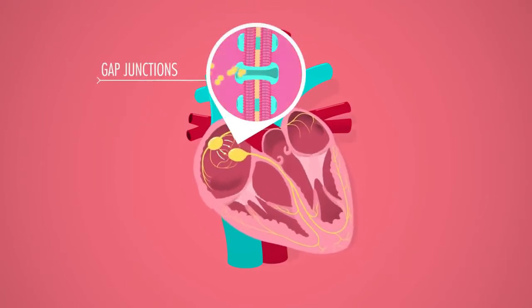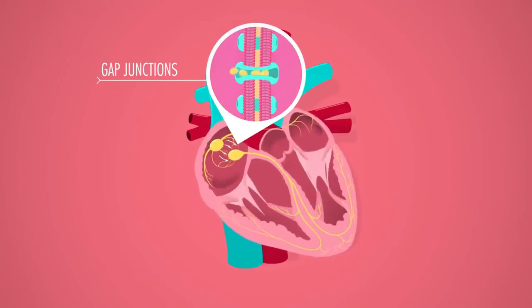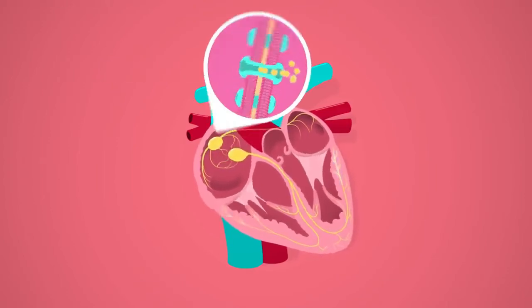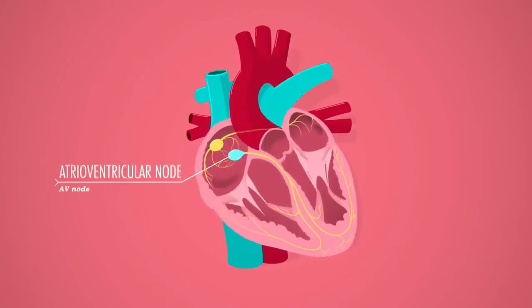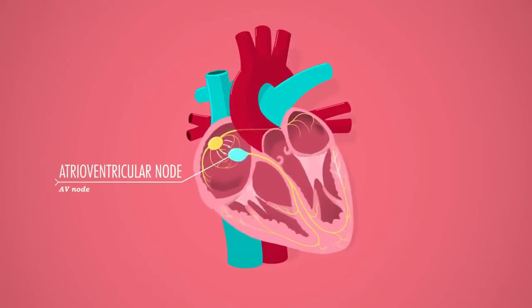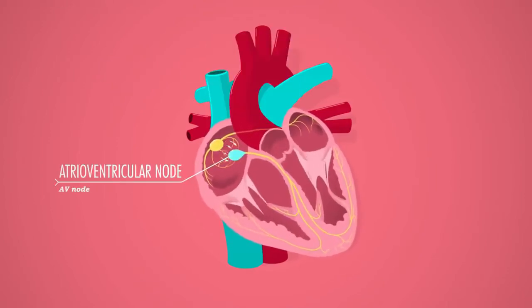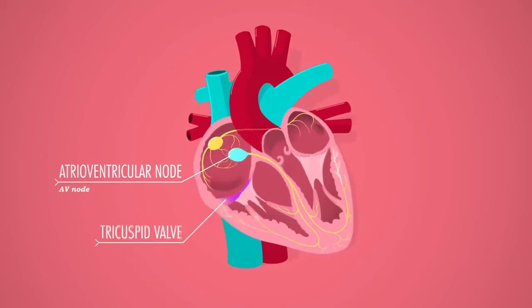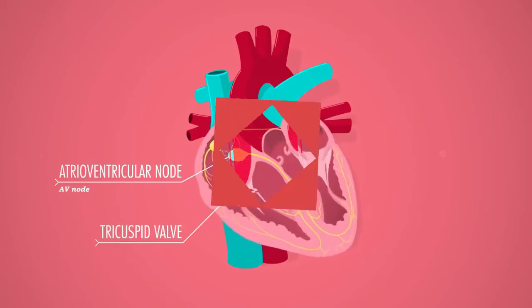The impulses leap across synapse-like connections between the cells, called gap junctions, and continue down the conduction system until they reach the atrioventricular node, or AV node, located just above the tricuspid valve.